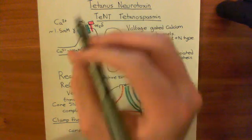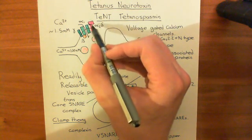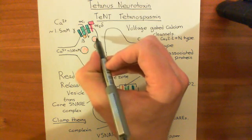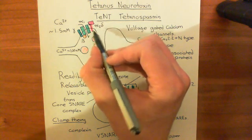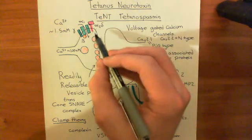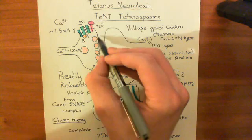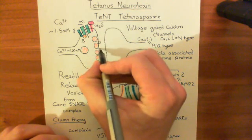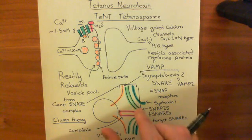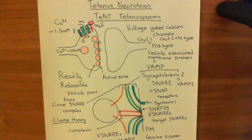The alpha-2 delta subunit binds to proteins involved in the docking complex of vesicles. This means that the voltage-gated calcium channels of the N and PQ type in these axon terminals are co-localized with the docked vesicles in the active zone. So when they open, they spray calcium ions directly onto the machinery holding the vesicle docked to the plasma membrane of the presynaptic cell.